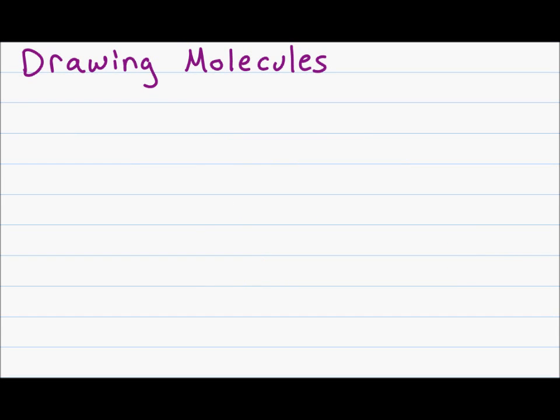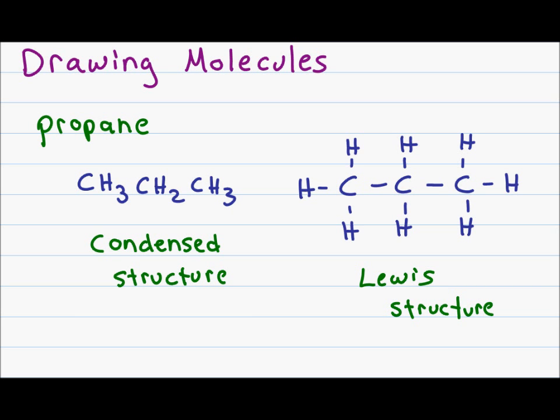We have already seen how to draw a molecule in a condensed and a Lewis structure. The example we used was propane and we saw the condensed structure where you simply write out what atoms are connected and how and the Lewis structure which shows you exactly where every atom is attached to another atom.